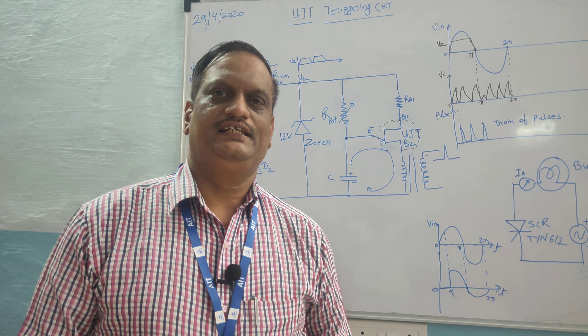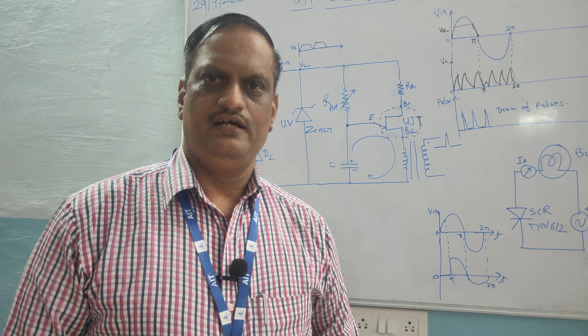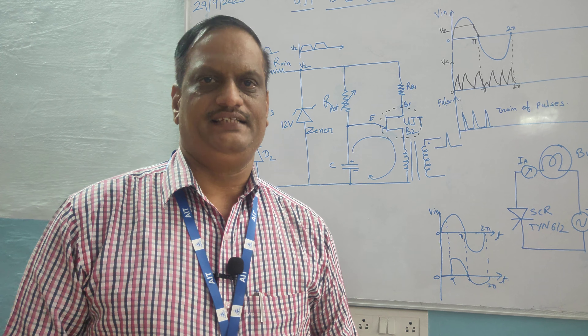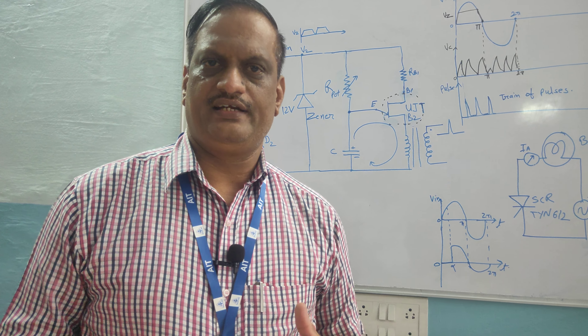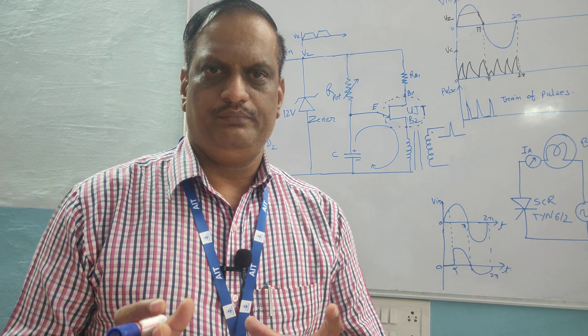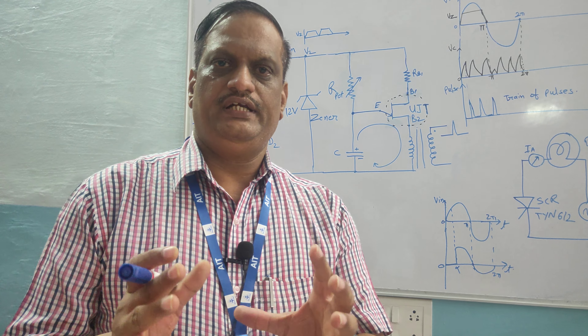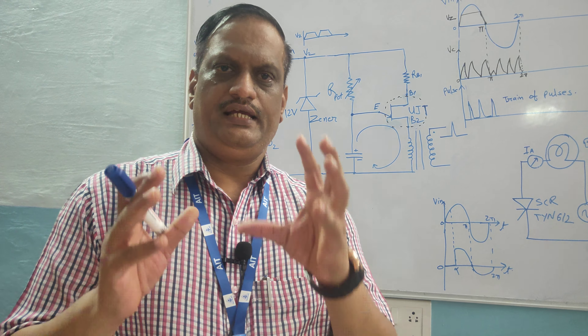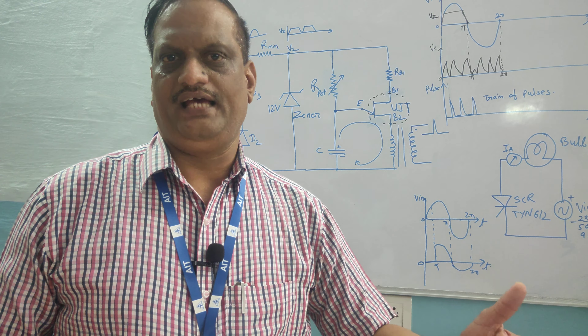Today, we will see the line synchronized UJT triggering circuit for the SCR. The circuit is built up around the UJT. UJT is used as an oscillator for generation of the pulses that will be applied to the gate of the SCR.